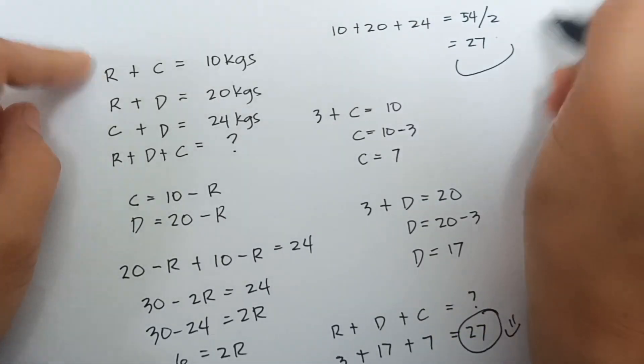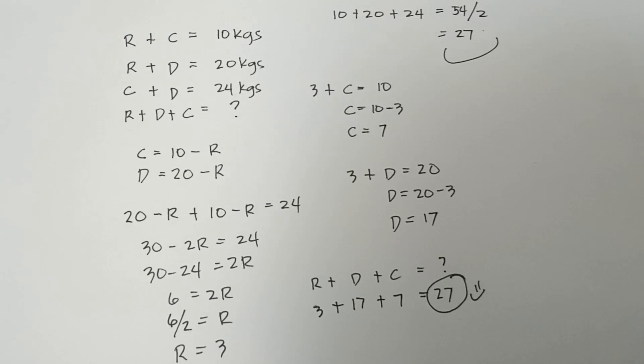Okay guys, that's all. And my answer is 27, the total weights of rabbit, dog, and cat. Thank you so much also to my friend, Akil King. I hope I answered it correctly.